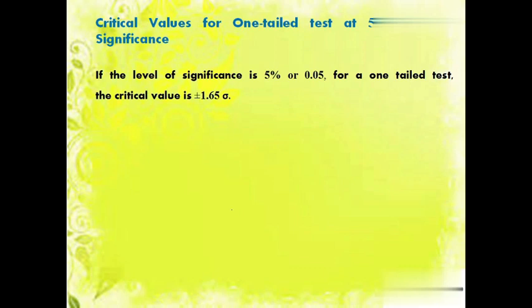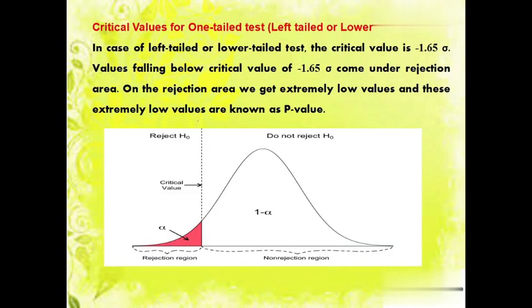Now we will look at critical values for a one-tail test at 5% level of significance. If the level of significance is 5% or 0.05 for a one-tail test, the critical value is plus minus 1.65 sigma. We can see that in a one-tail test, if the tail is entirely on the left side, it is called a lower tail test.